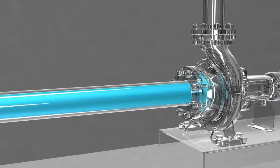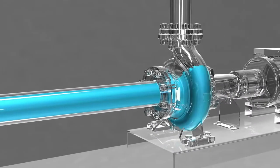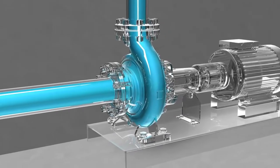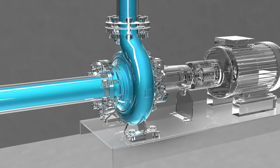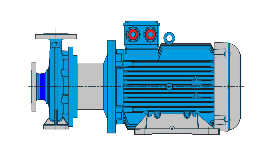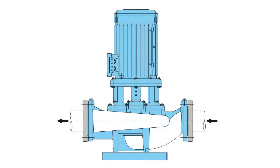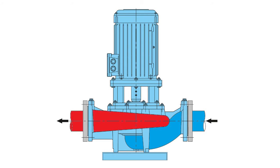Centrifugal pumps are used to transport fluids by the conversion of rotational kinetic energy to the hydrodynamic energy of the fluid flow. The rotational energy typically comes from an engine or electric motor. They are a subclass of dynamic axisymmetric work-absorbing turbo machinery. The fluid enters the pump impeller along or near to the rotating axis, and is accelerated by the impeller, flowing radially outward into a diffuser or volute chamber, from which it exits.